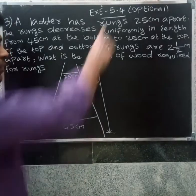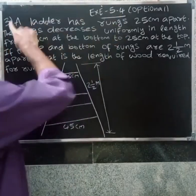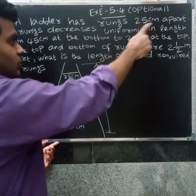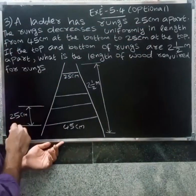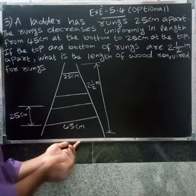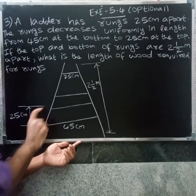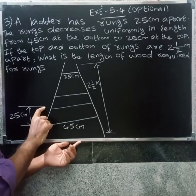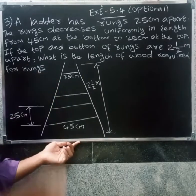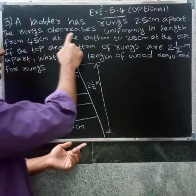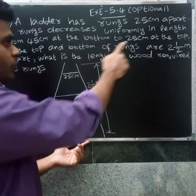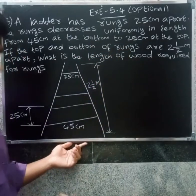Welcome friends. I am going to show you a third question. A ladder has rungs 25 cm apart. The rungs decrease uniformly in length from 45 cm at the bottom to 25 cm at the top.